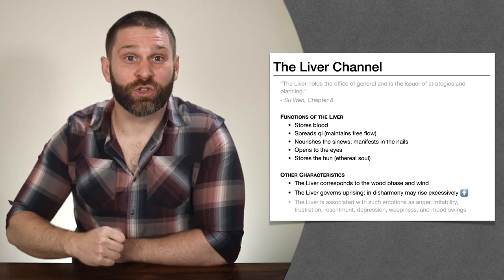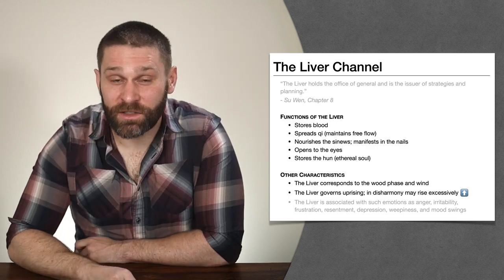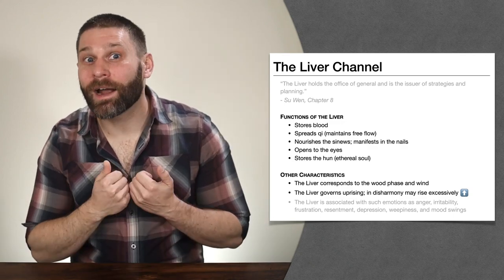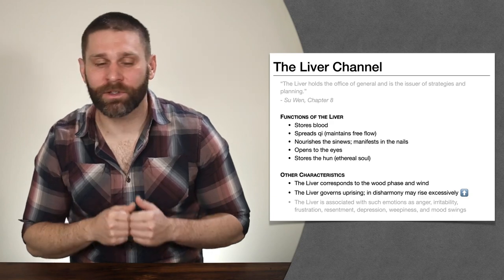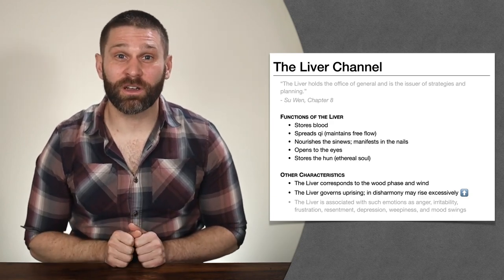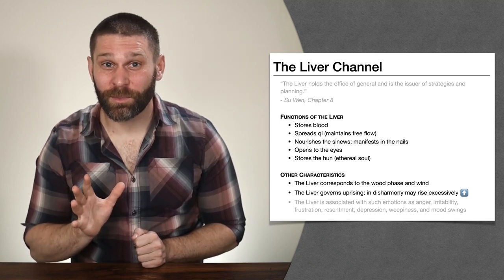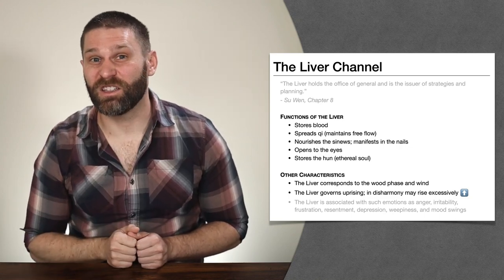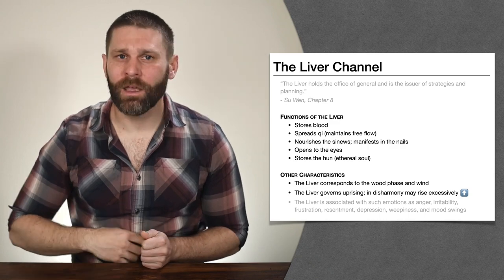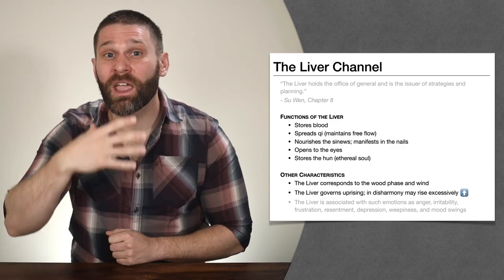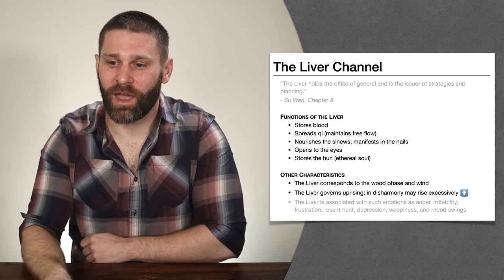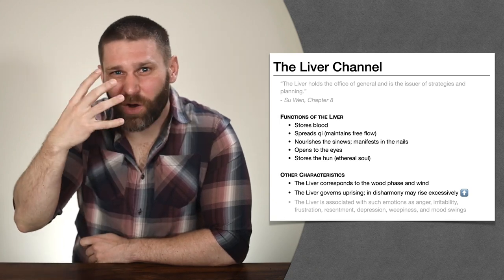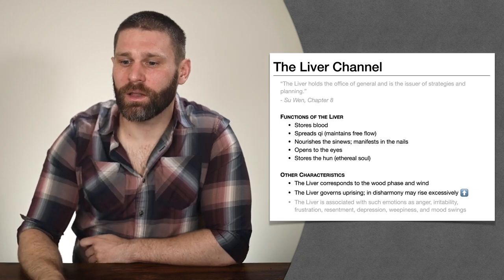Like we said, the liver is like a tree — trees grow upward, so the liver governs uprising. But what can be a problem is hyperactive uprising, where the liver can rise excessively. So we get liver heat, liver yang rising. When we look at our points, we might see certain conditions, especially with heat, where liver qi rises up and we get symptoms in the upper body or in the face — dizziness, red eyes, blurred vision, headache — where there's just too much yang rising upward and we need to calm it down or subdue that yang.